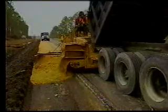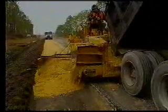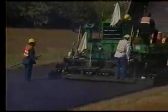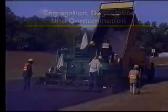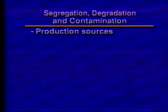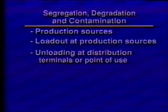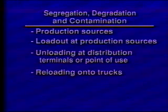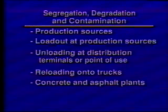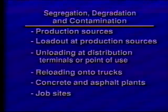Segregation, degradation, and contamination alter the specified properties of the aggregate, and thus the properties of the construction where the aggregates are used. They occur at production sources, at loadout from production sources, at unloading at distribution terminals or point-of-use, at reloading onto trucks, at concrete and asphalt plants, and at job sites. Therefore, knowledge and practice of proper handling and storage is necessary for everyone concerned in the aggregate's chain of use.